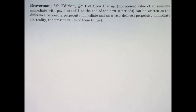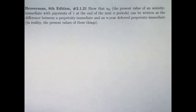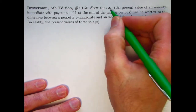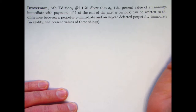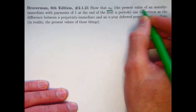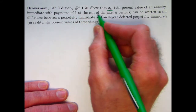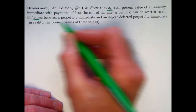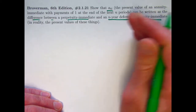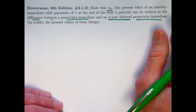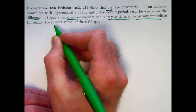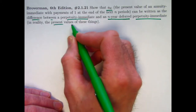Here's the problem statement. The problem says: show that a_n — the present value of an annuity immediate with payments of one at the end of the next n periods — can be written as the difference between a perpetuity immediate and an n-year-deferred perpetuity immediate, where the n-year deferral means you wait n years for it to start. Because it's a perpetuity immediate, it actually starts at time n plus one. We're after the difference of the present values of these things.